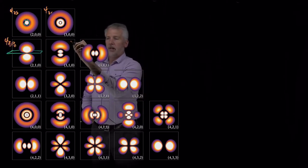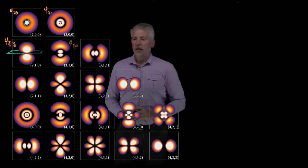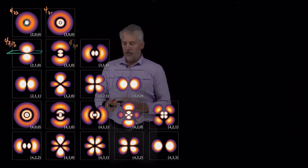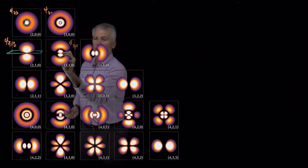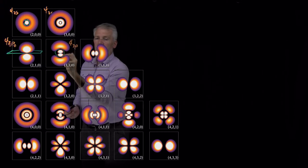The 3p orbital, shown here for the 3-1-0 wave function, again has both a radial node, the sphere right here where we never find the electron,